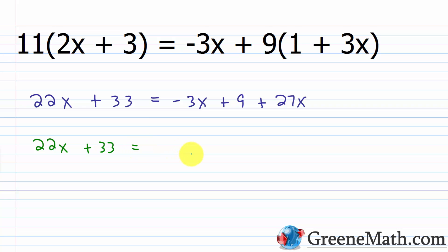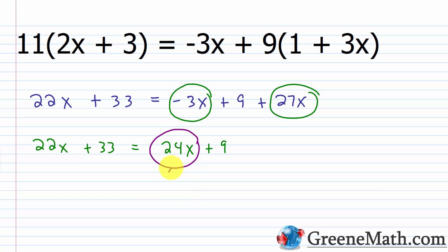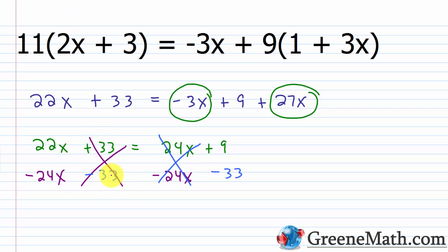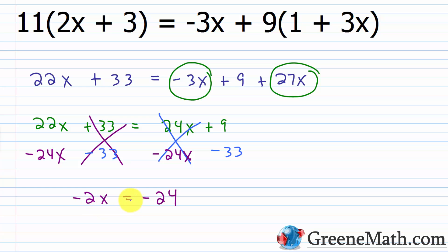On the right I can combine like terms. I have negative 3x and 27x, which gives 24x, and then plus 9. Now I'll move all variable terms to one side and constants to the other. I subtract 24x from each side — that cancels — and subtract 33 from each side — that cancels too. On the left: 22x minus 24x is negative 2x. On the right: 9 minus 33 is negative 24. So now I have negative 2x equals negative 24.